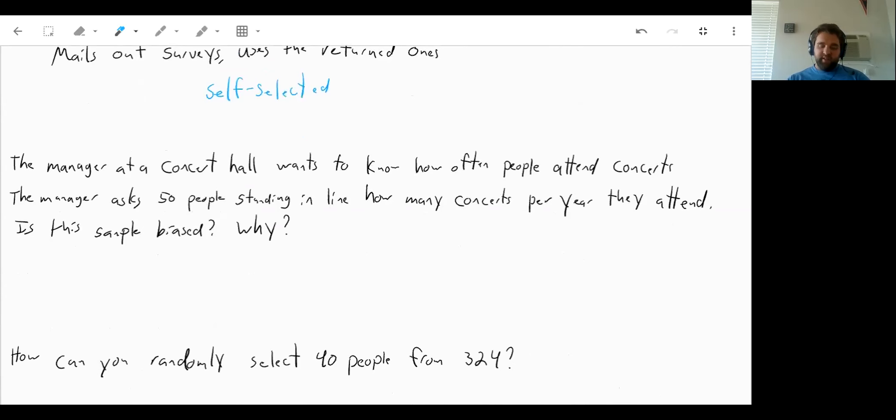A manager at a concert hall wants to know how often people attend concerts. So the manager asks 50 people standing in line how many concerts per year they attend. Is the sample biased? Why? Well, yeah. It is biased. Because if they are at the concert, that means they're more likely that they are already going to concerts. If a good chunk of the population doesn't go to any concerts, that's not even going to be represented here. Because everyone here is guaranteed to already be going to at least one concert. So this is absolutely a biased sample.